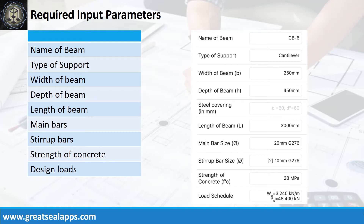Enumerate input parameters required. Name of beam: CB6. Type of support: cantilever. Width of beam: 250 mm. Depth of beam: 450 mm. Length of beam: 3000 mm. Main bars: 20 mm bar at grade 276. Stirrup bars: 10 mm bar at grade 276. Strength of concrete: 28 MPa. Factored uniform load: 3.24 kN per meter. Factored concentrated load: 48.4 kN.